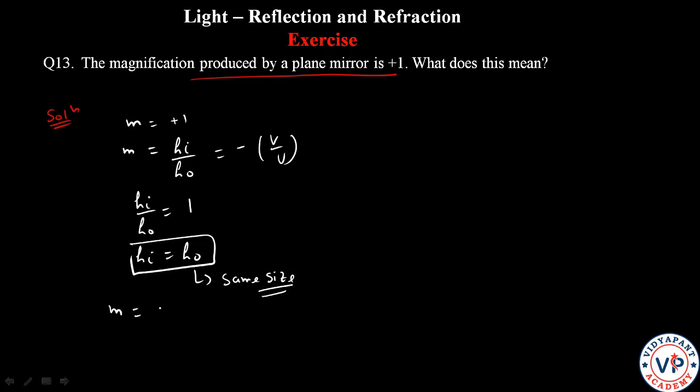Second thing, m value is positive. If m value is positive, the image will be erect and the same size.